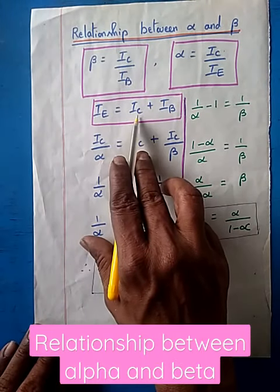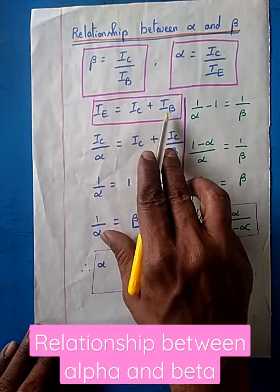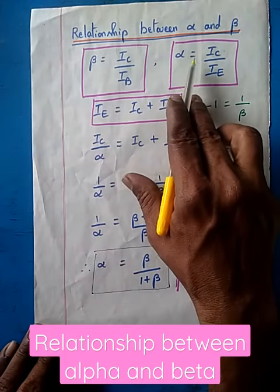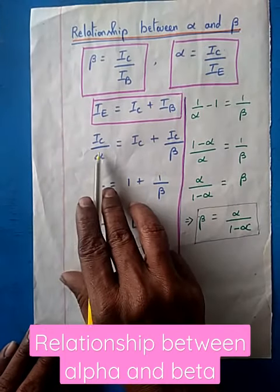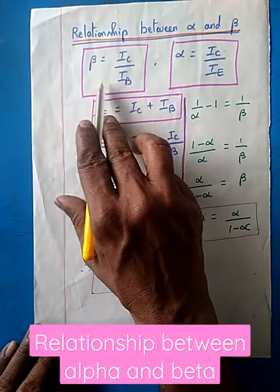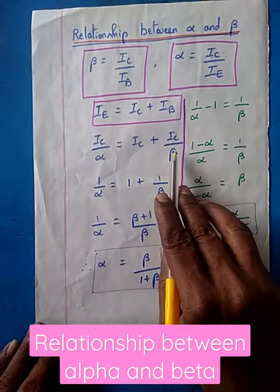Emitter current equals collector current plus base current. From this relation, Ie equals Ic by alpha. You substitute here. From this relation, Ib equals Ic by beta. You substitute here.